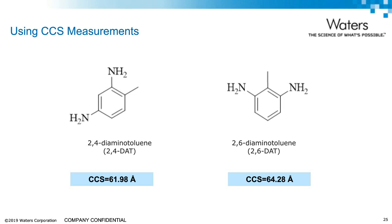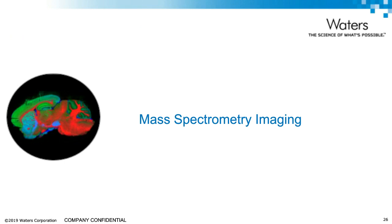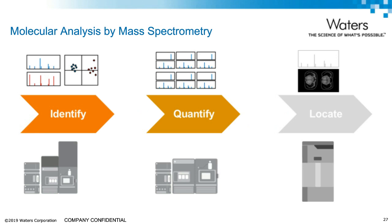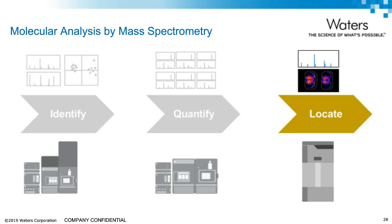An area which brings together a number of techniques we have already discussed in this webinar series is mass spec imaging. This technique encompasses ion generation, separation, and analysis — and you get to see beautiful images. So far in this webinar series, we have talked about two aspects of molecular analysis by mass spectrometry: ionifying the molecule and quantifying that molecule. Now we're going to spend a few minutes talking about locating those molecules by using imaging mass spectrometry.